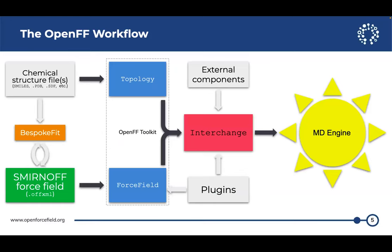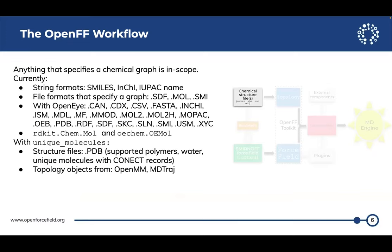Here's the OpenFF workflow. System preparation happens between the chemical structure files section and the topology section — that's where you're putting things together and solvating. You can bring us your prepared system in any format. If you have the OpenEye wrapper in particular, or an OpenEye license, the list of formats you can use is enormous. With our RDKit backend, you can handle quite a few common formats — except MOL2, because that's very tricky. More or less, anything that defines a chemical graph is in scope as a starting point for OpenFF.